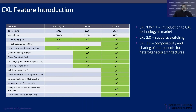CXL 3.0 came out in 2022 and 3.x will be announced in 2023. It doubles the bandwidth from 32 gigatransfers per second to 64 gigatransfers per second per lane. It adds features like flip mode, multi-level switching, sharing of memory, and sharing of resources. It also supports Type 1 and Type 2 devices over the root port, allowing multiple devices connected via the CXL 3.x fabric.